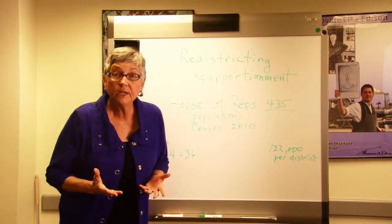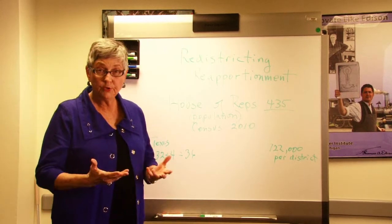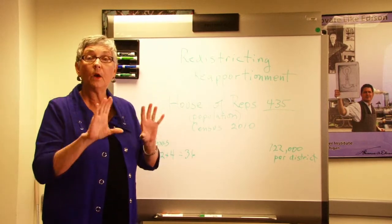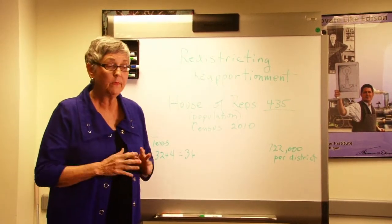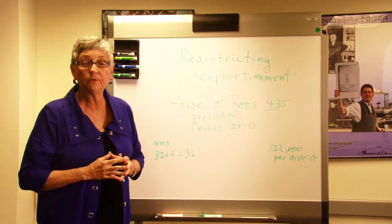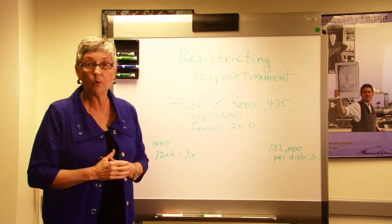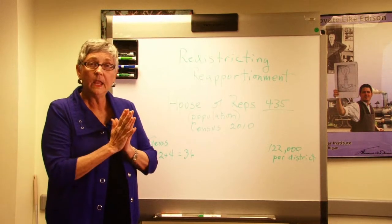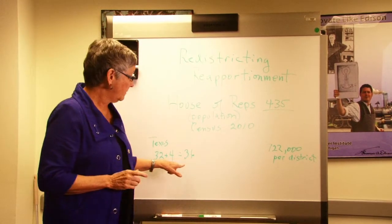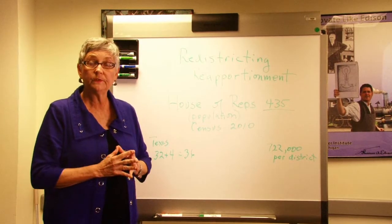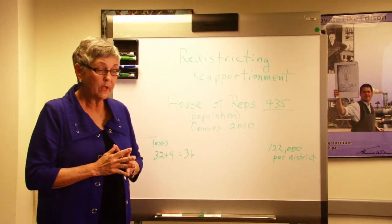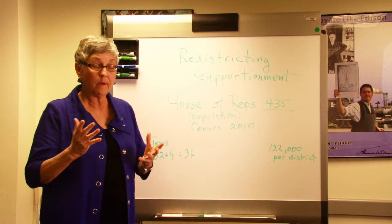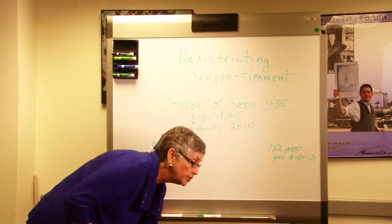The states that are losing in population are losing members, losing representation — states like New York, Ohio, states in what they call the Snow Belt or the Rust Belt up in the Midwest or Northeast, where it's cold and people are moving out and coming to the Sun Belt where we live. Each state, once they determine how many representatives they have, has to draw districts for their representatives to serve in. We have what we call single member districts, meaning one person is elected to represent you in Congress from that district.